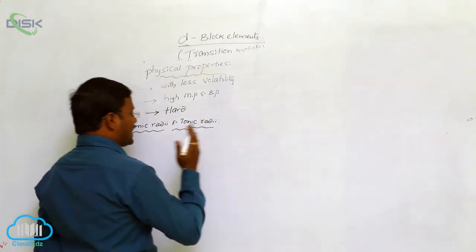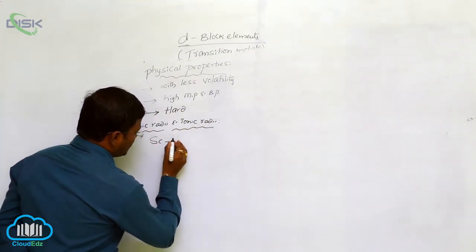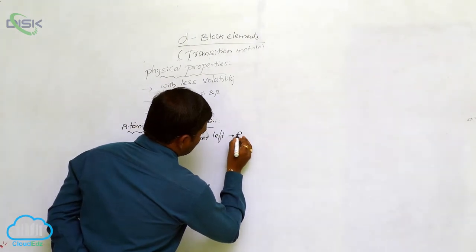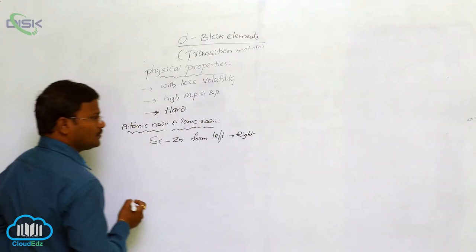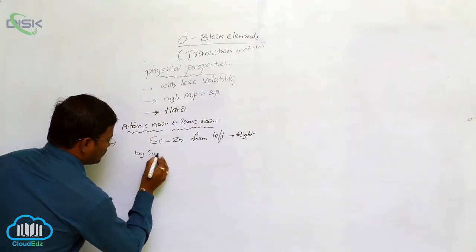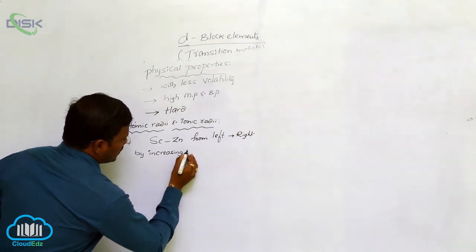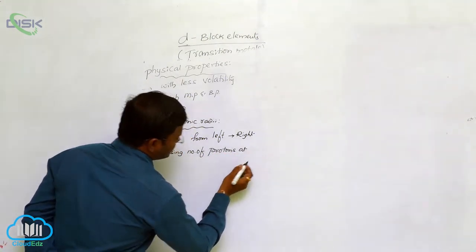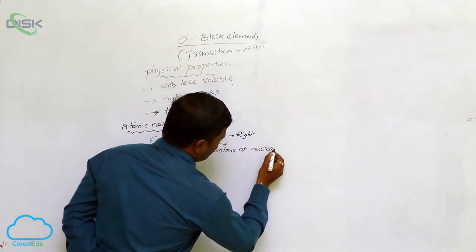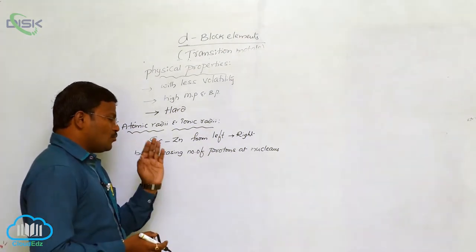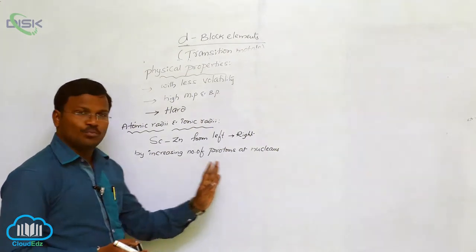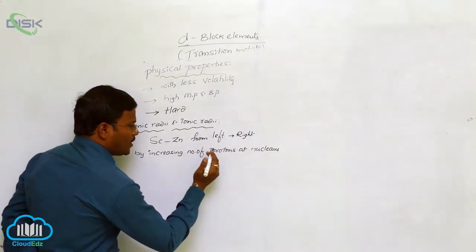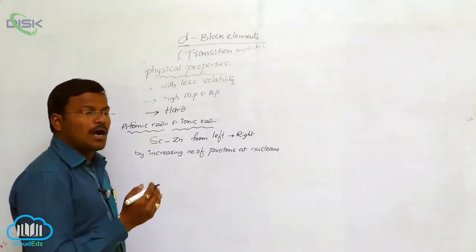Moving from the left side to the right side of the periodic table, from scandium to zinc or yttrium to cadmium or lanthanum to mercury, there is an increasing number of protons at the nucleus — a one-unit increase in positive charge at the nucleus due to increasing atomic number.